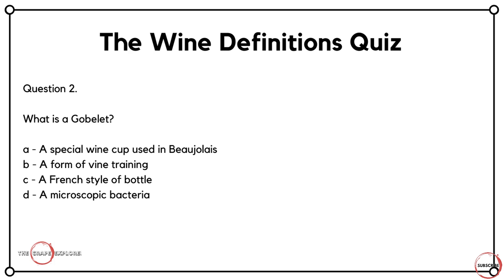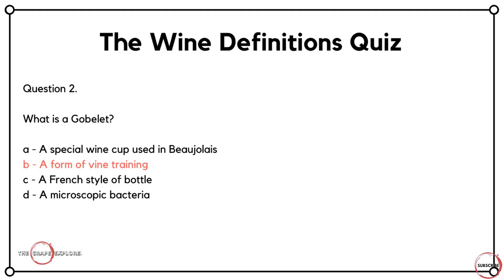Question two: What is a goblet? Is it A, a special wine cup used in Beaujolais? Is it B, a form of vine training? Is it C, a French style of bottle? Or is it D, a microscopic bacteria? What's interesting about this question is the region where this is popularly used is actually part of one of the answers, but it doesn't mean it is a special cup from Beaujolais. It is used in Beaujolais where the vines are trained and tied together to form what they call a goblet. So if you've gone for answer B, you're correct — it's a form of vine training.